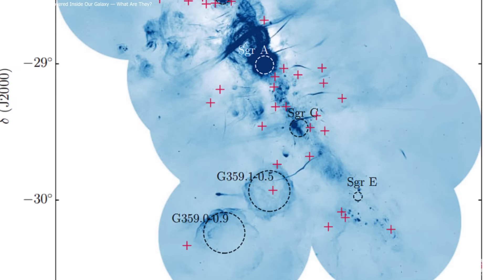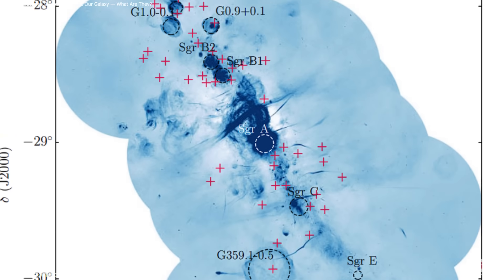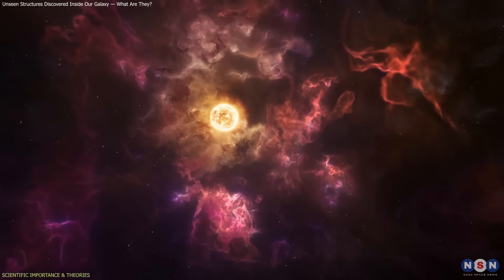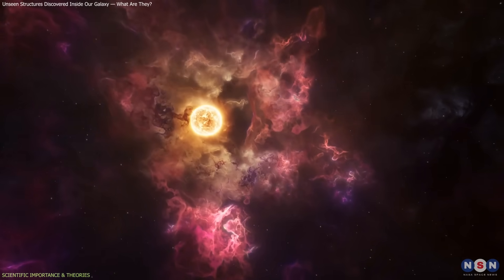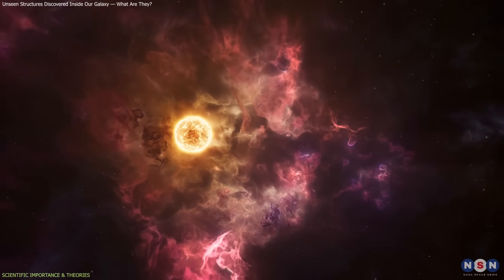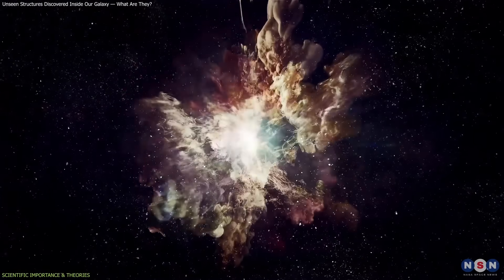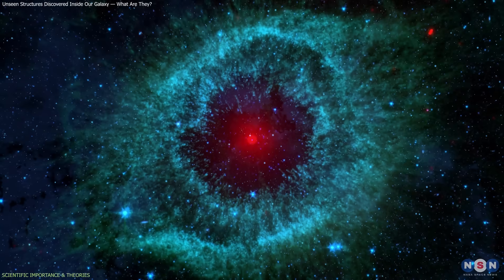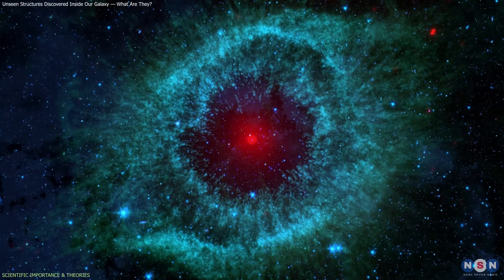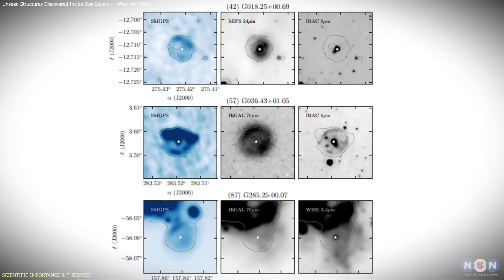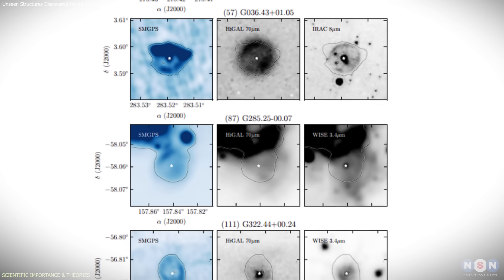The newly detected rings represent more than an observational curiosity. They offer a fresh way to study how stars evolve and how their life cycles affect their surroundings. One major hypothesis involves planetary nebulae. As sun-like stars die, they shed their outer layers, forming shells of gas and dust that emit faintly in the radio spectrum. Several rings share the characteristics expected of these objects.